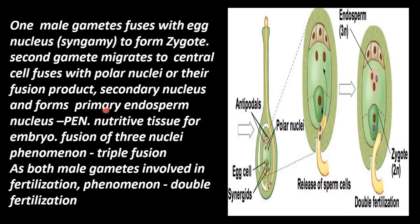This results in triple fusion, forming the primary endosperm nucleus, abbreviated PEN. The fusion of three nuclei together is called triple fusion. Since both male gametes participate in fertilization events, the overall process is called double fertilization.